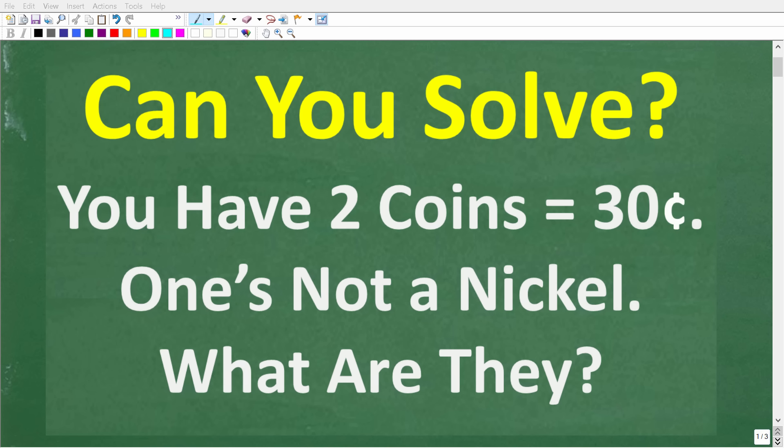This simple little math problem is going to confuse a lot of people. Let's see if you can figure it out. You have two coins and the value of these two coins is 30 cents.